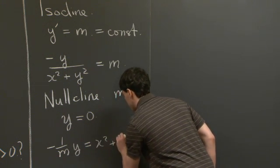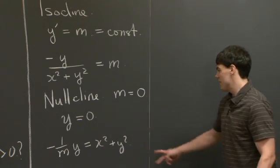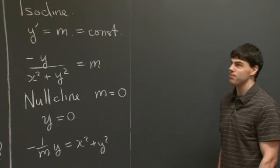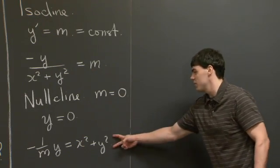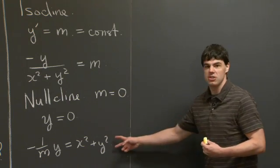So specifically, I'm going to multiply through by x squared plus y squared and divide by m. And we see that we have a quadratic in x and y, and we have one linear term. So whenever we have a relation like this, and we want to understand what it looks like, typically the approach is just to complete the square.